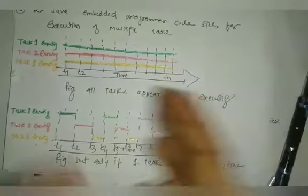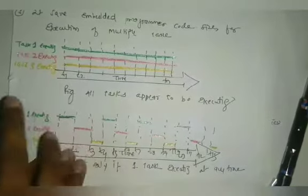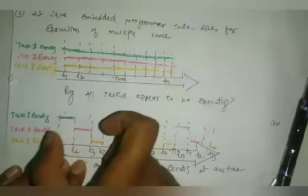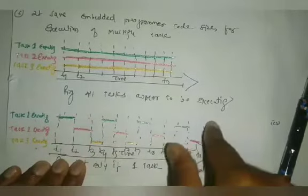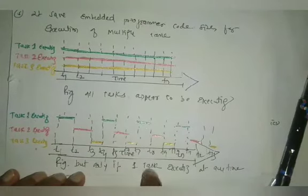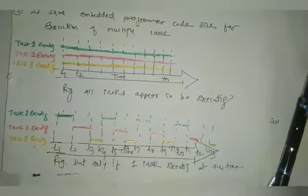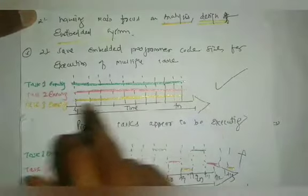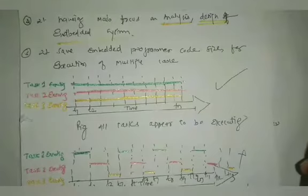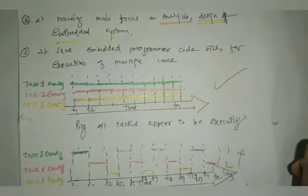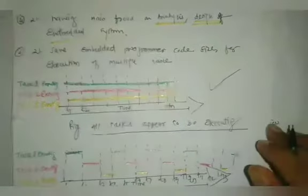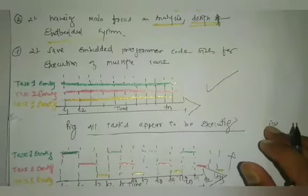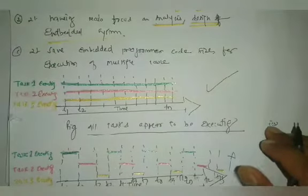We can share time among multiple tasks — three tasks — but each is given some time limit. This is called only one task execution at a time, where another task is in waiting. If we provide task one, task two, and task three each their own execution slot, then none of the tasks is in waiting — all tasks appear to be executing together using time slots.